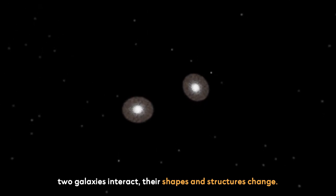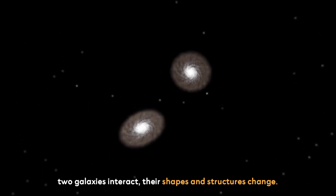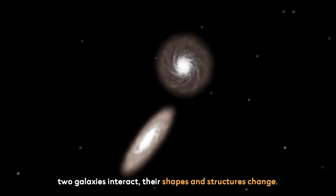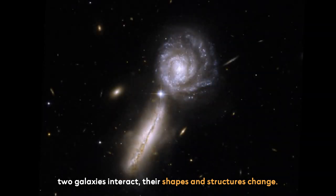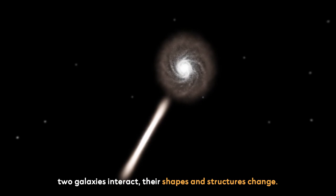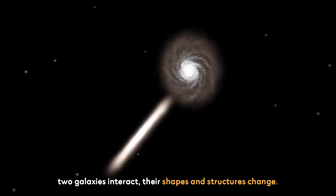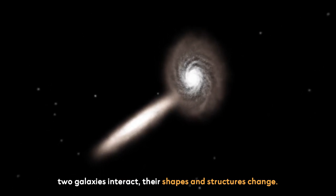According to NASA, the way galaxies interact is now thought to be a big part of how they change over time. Each time two galaxies interact, their shapes and structures change. This is because galaxies can merge, collide, or brush past each other.